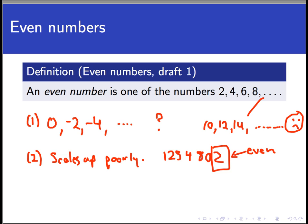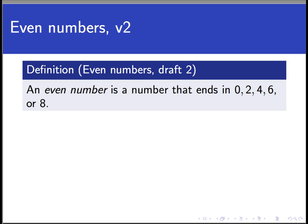So based on that reasoning, we can upgrade our definition to something that looks more like this. An even number is a number that ends in 0, 2, 4, 6, or 8. And in fact, this is the definition my kids get in elementary school, and maybe some of you are in the same boat.